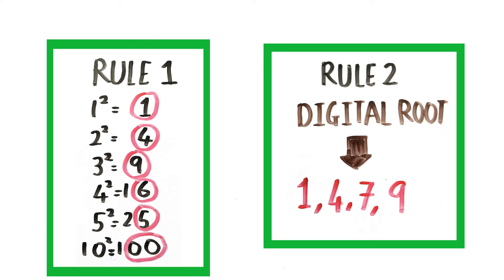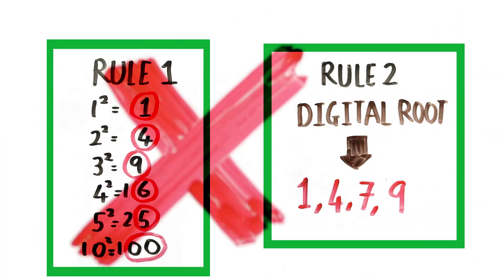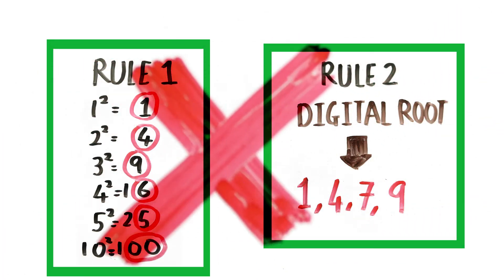If suppose we test a number with these two methods and any one of them fail, we can simply conclude that the number is not a perfect square. So let's try it out.